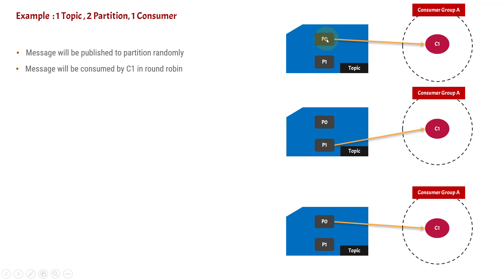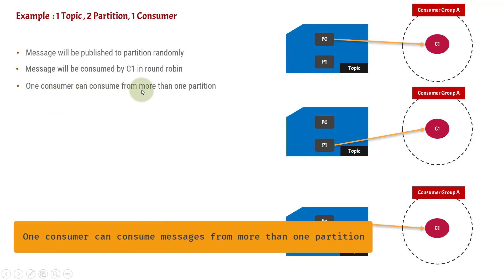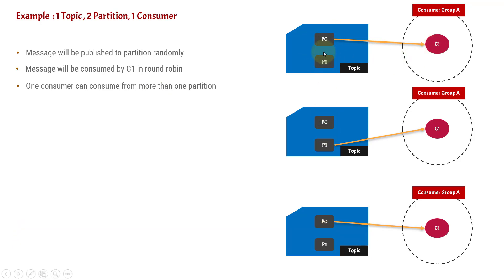It will go starting from P0, then P1, then P2, then P3, up to P9. A single consumer instance inside a consumer group is going to read from all the partitions when there is a single consumer group containing a single instance and the partitions are more than one. One consumer can consume from more than one partition — the consumer is not tightly coupled to a single partition. It can read from any partition.